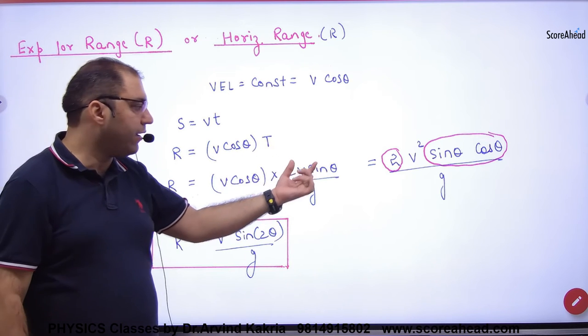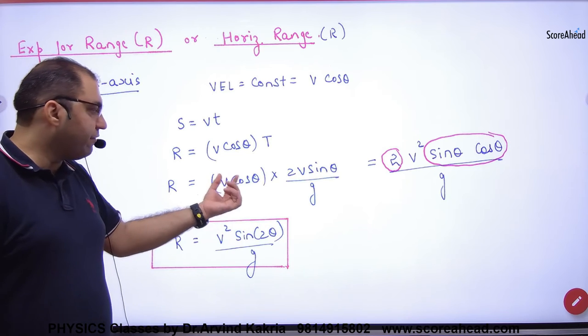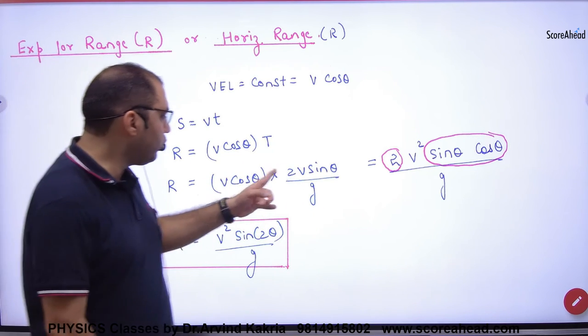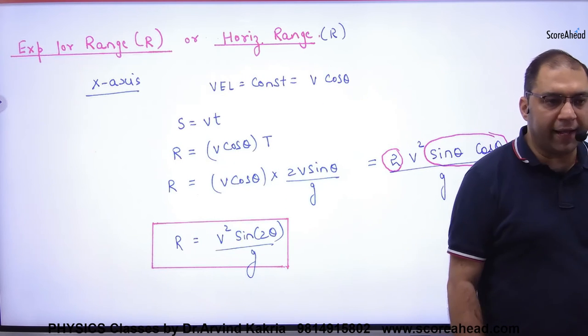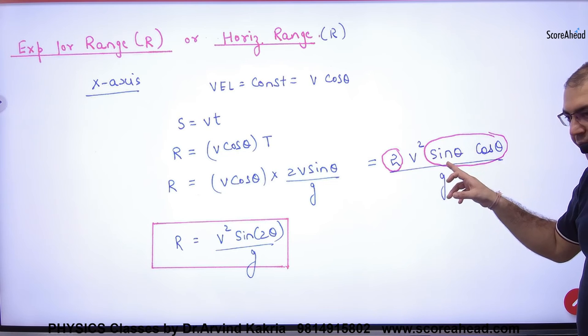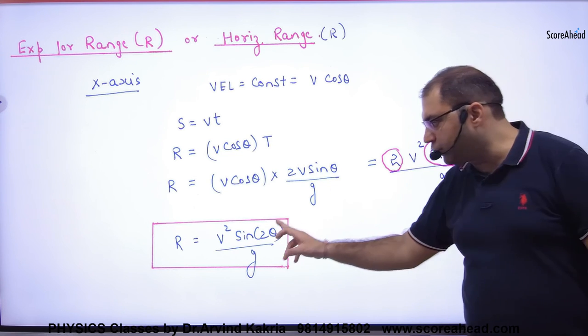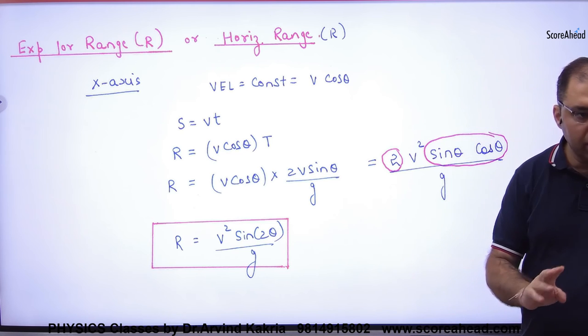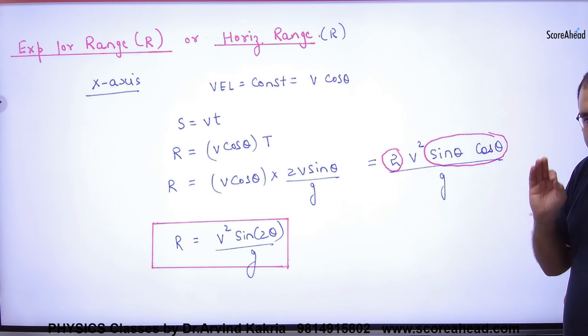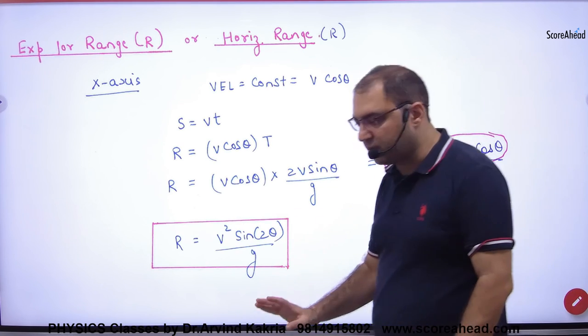And what time of flight is? 2v sin theta by g. So R equals vcos theta into 2v sin theta by g. So v into v is v square. In maths there is a formula in trigonometry that 2 into sin theta into cos theta is always equal to sin of 2 theta. So remember, 2 into sin theta into cos theta can be written as sin of 2 theta. So this is what expression you have.